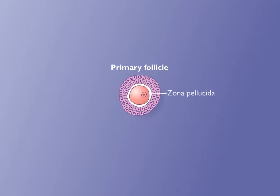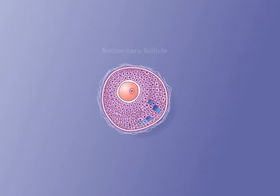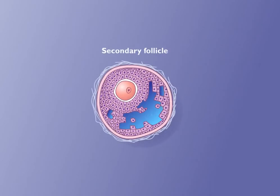The zona pellucida forms around the oocyte. The structure is called a secondary follicle when fluid-filled vesicles develop among the granulosa cells and a well-developed capsule, or theca, becomes apparent around the granulosa cells. The theca possesses internal and external layers.